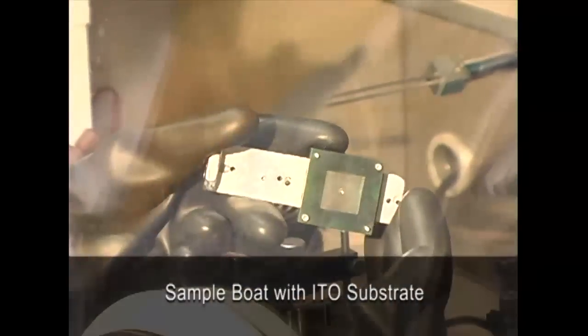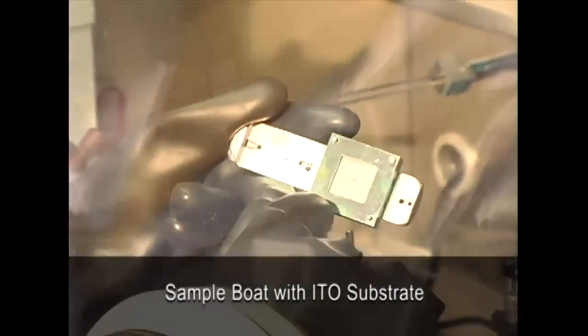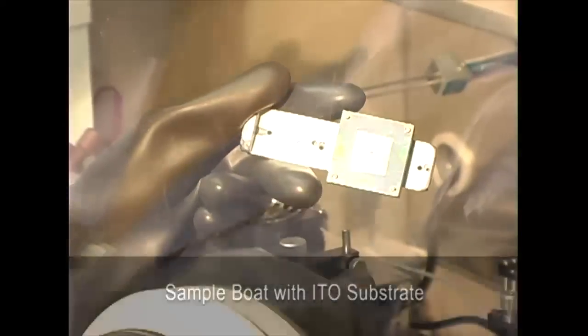The fabrication of a solar cell begins with assembling a sample boat containing glass substrate that has been coated with indium tin oxide. The ITO is electrically conductive and transparent to light.